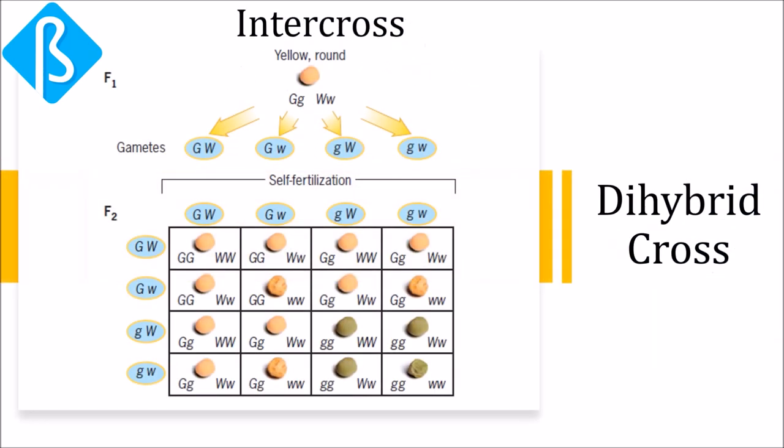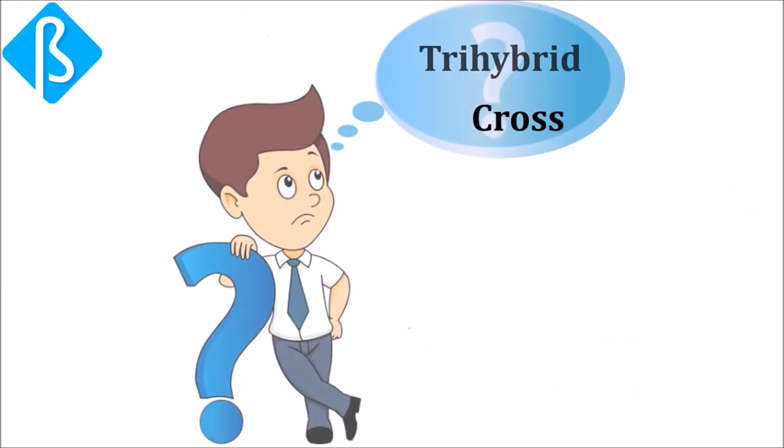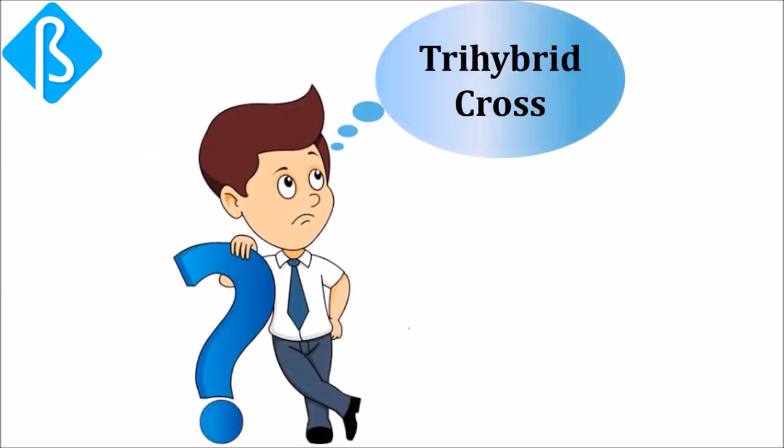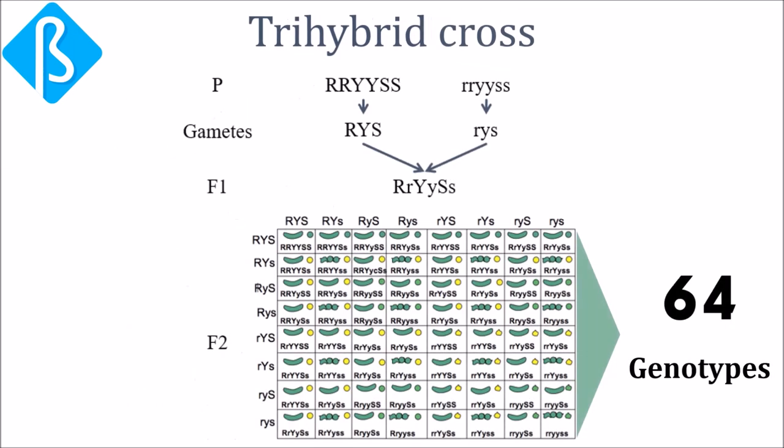The same method of Punnett square can also be applied for dihybrid cross, where it gives 16 possible genotypes from which we get 9:3:3:1 phenotypic ratio as we have seen in the previous video lecture. But what if there is trihybrid cross taking three genes? Well, over there the Punnett square will give 64 possible genotypes.